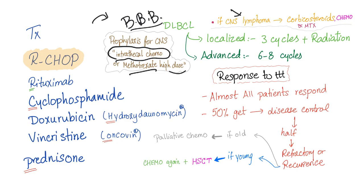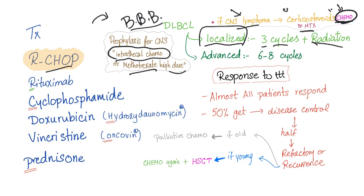If there is CNS lymphoma, it is treated with chemotherapy such as methotrexate and corticosteroids. CNS lymphoma is the only brain cancer not treated by surgical resection. If the diffuse large B-cell lymphoma is localized, use three cycles of R-CHOP plus radiation. If it is advanced or disseminated, radiation will not work and you need six to eight cycles of R-CHOP.